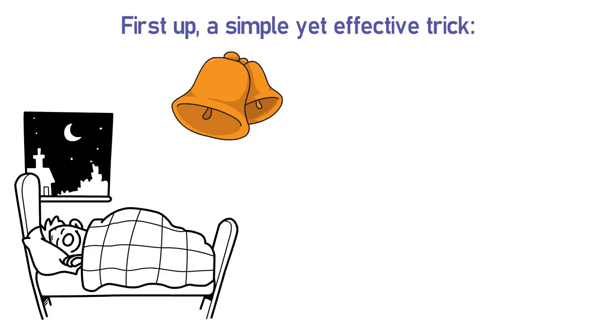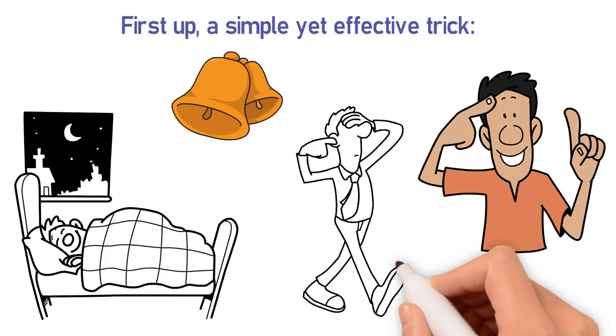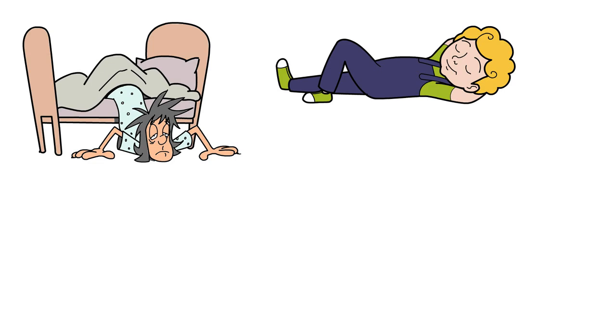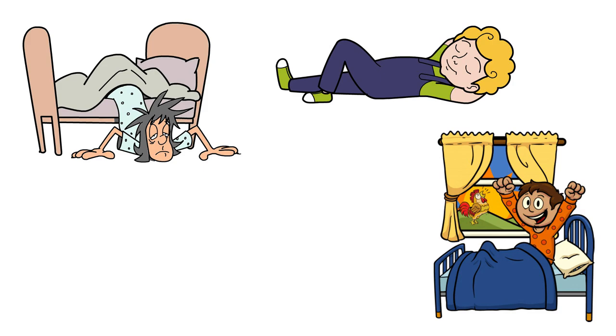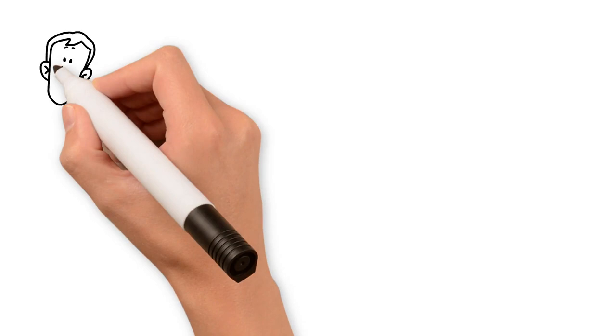First up, a simple yet effective trick: place your alarm clock across the room. It sounds straightforward, but it's a game-changer. By doing this, you're not just hearing the alarm, you're physically required to get out of bed to turn it off. As you make that short journey across your room, you're already shaking off the tendrils of sleep. This movement kick-starts a shift from the sleep mode to wakefulness. It's a small step, but it sets a crucial momentum for your day.